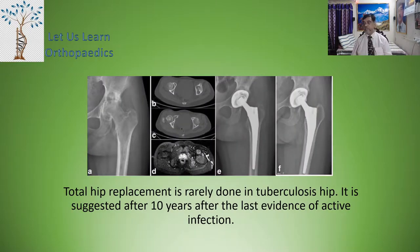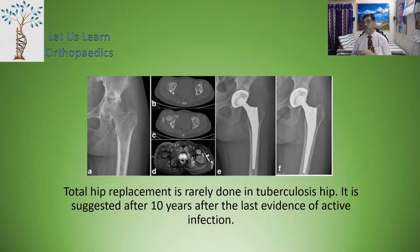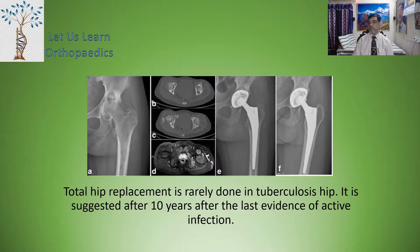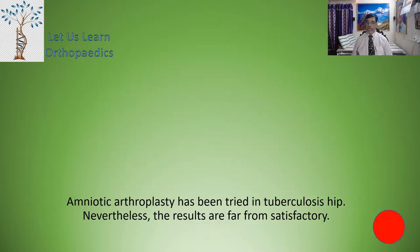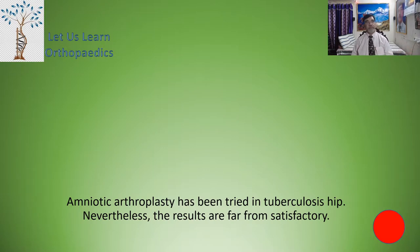Total hip replacement is rarely done in tuberculosis of the hip. The standard teaching suggests that only after 10 years of the last evidence of active infection can you proceed with total hip replacement in TB hip. However, with advances in arthroplasty surgery, people are now doing it even within 3 to 4 years of tuberculosis of the hip. Interposition arthroplasty has also been tried in tuberculosis of the hip, but the results are far from satisfactory. Here we end our discussion on the tuberculosis of the hip.